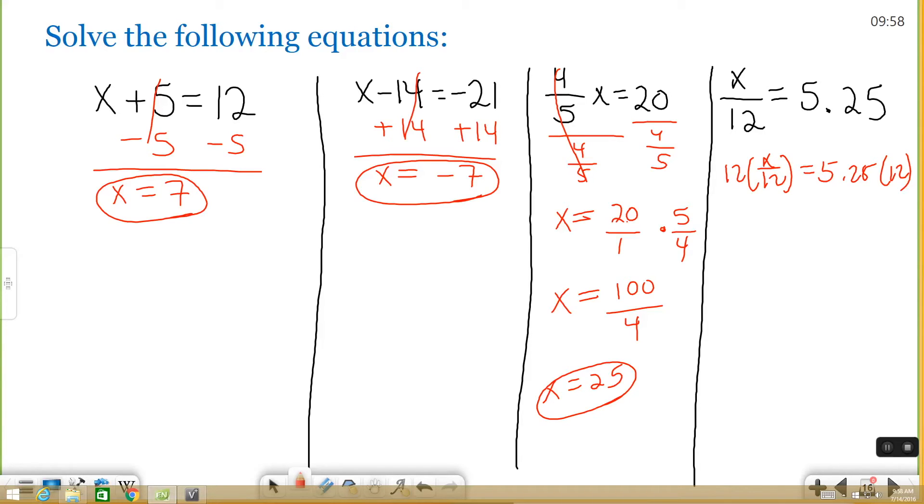On the left, it cancels out, and that's why you multiply by 12, so it will cancel out. And 5.25 times 12 is going to get you 63, which you can type into a calculator and get your answer.